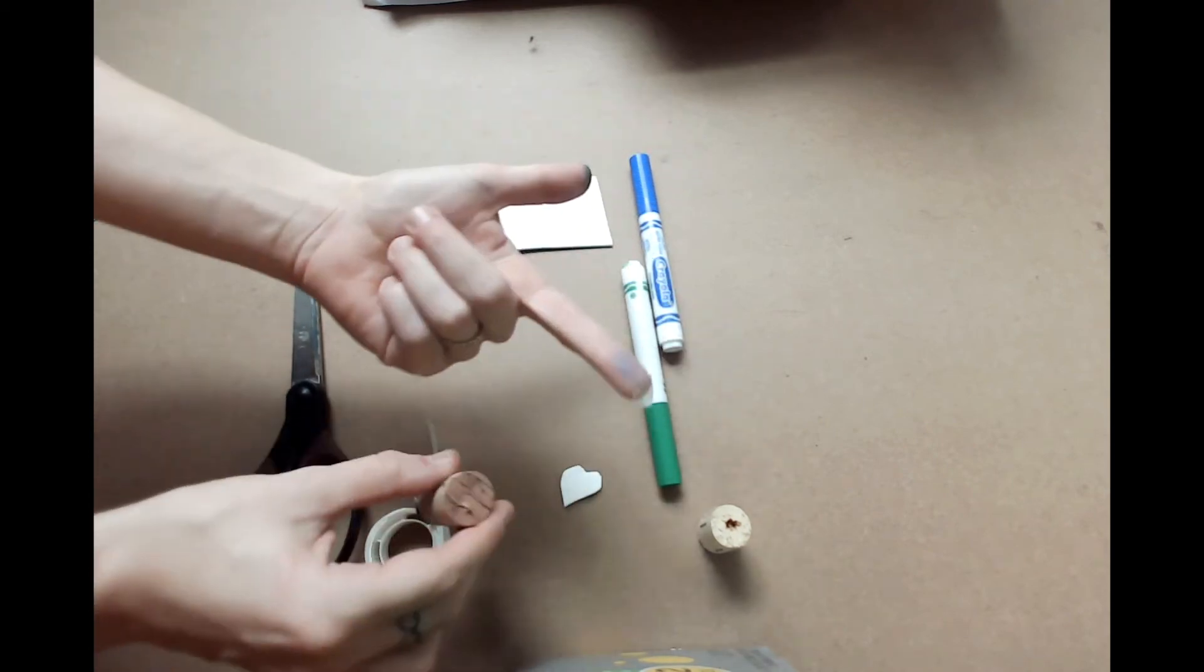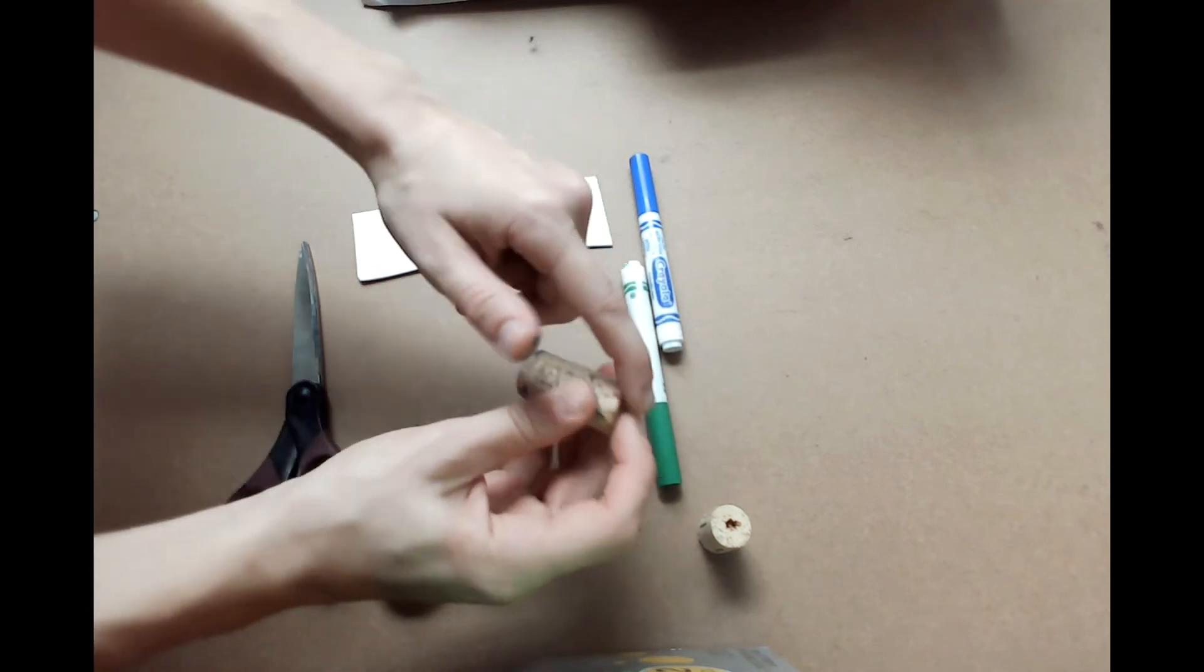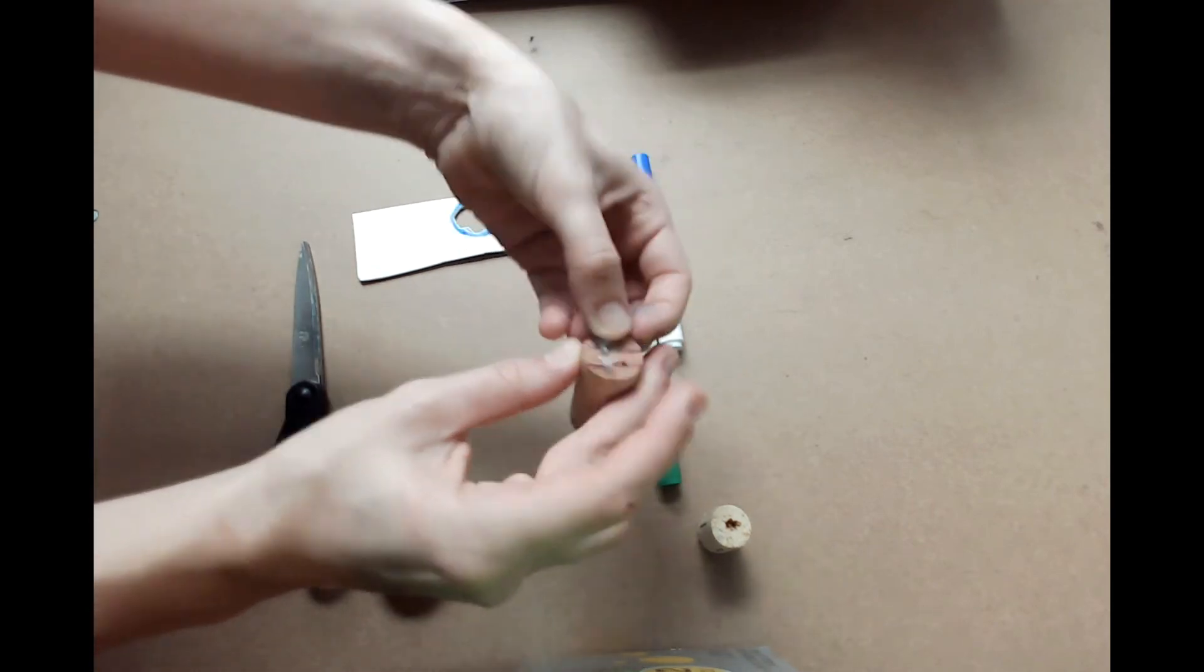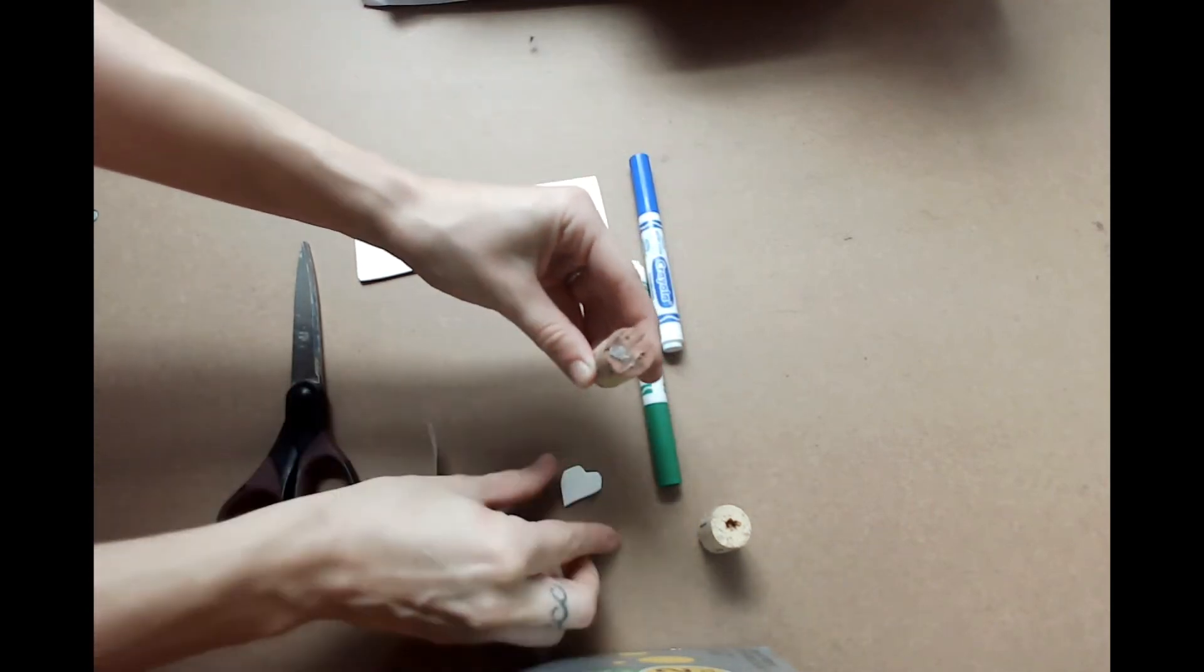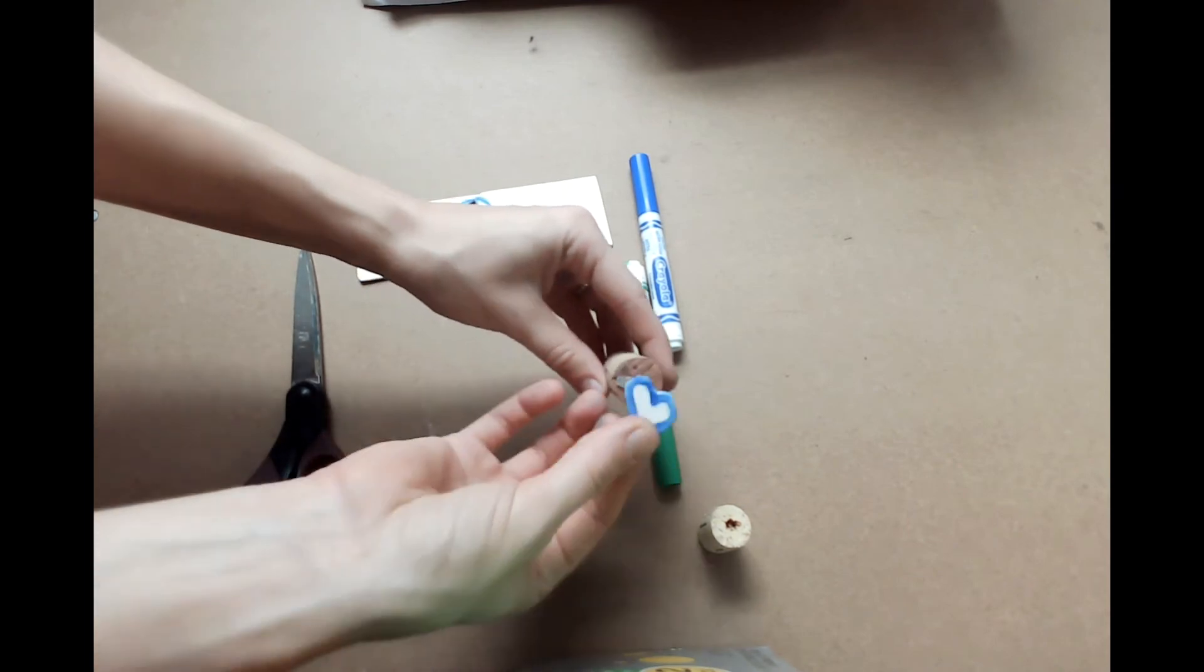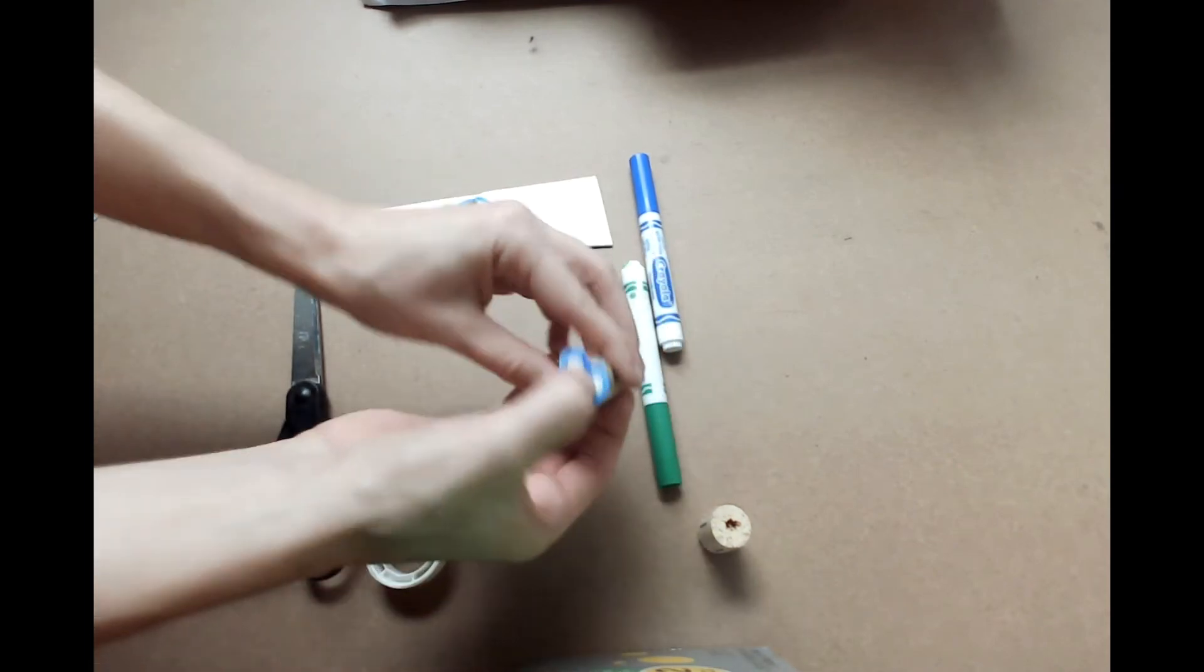You'll just take your glue dot on your finger and stick it right to the top of the cork. And then we'll take our shape and press it into the glue dot on the top of the cork.